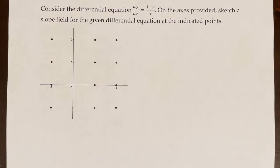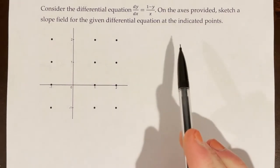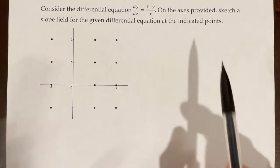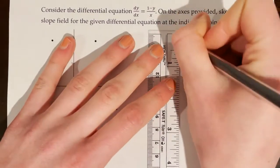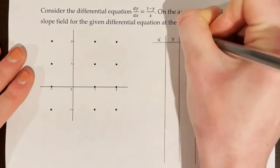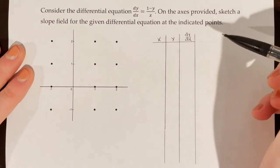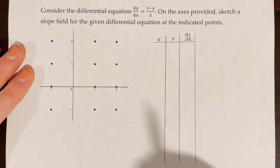Let's practice sketching a slope field. Consider the differential equation dy/dx = (1 - y) / x. On the axes provided, sketch a slope field for the given differential equation at the indicated points. The strategy we are going to use is making a table. I'm going to make a table for x, y, and dy/dx, and fill it in with the given coordinate points.